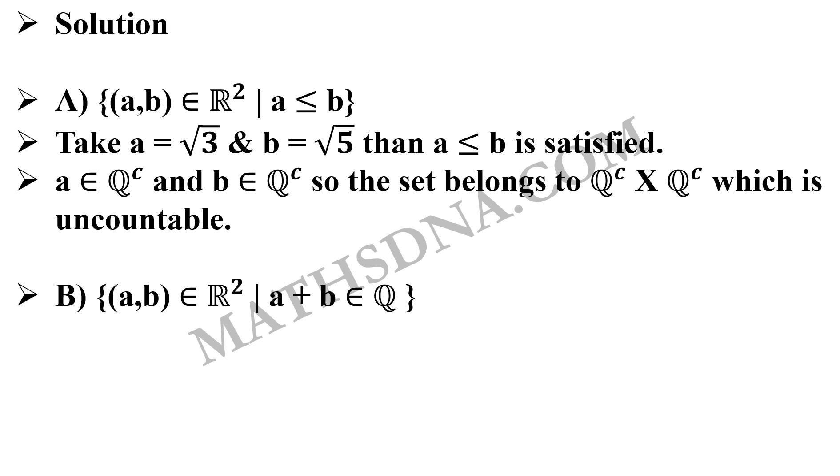So you can again take a = √3 and b = -√3. Then a+b will be 0, which will be an element of Q.